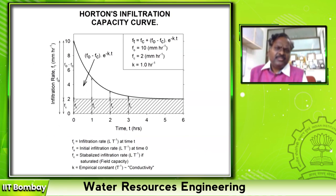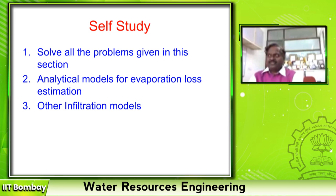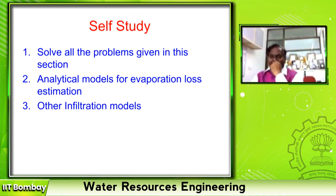This is the simple Horton infiltration capacity curve. F0 and Fc are the boundary values; the curve decays only between F0 and Fc. These are all some of the abstractions. I am very skeptical about using the word 'loss' — especially since infiltration is a major input for other hydrological studies — but as a water resource engineer, it is not going to reach my reservoir, which is why our seniors referred to it as a loss.